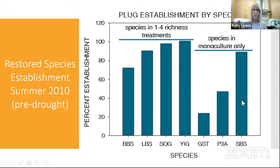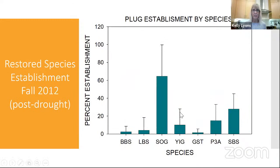The exceptional drought hit, and by fall 2012 side oats grama held up while everything else dropped down considerably. I put this experiment in, the drought hit, and it kind of became a drought experiment — which is fine, because we're going to be seeing a lot more drought in the future and we want to know how to do restoration under drought conditions.